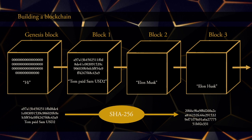Let's now link block number one and block number two together. This is done by computing the hash of block number one and putting that into block number two. More specifically, we take the content of block number one, which is the hash of the Genesis block and the text string TomPageSamUSD2. We put that into a single text string and compute the hash of that, giving the result 20BBC9 and so on, and we copy that result into block number two.